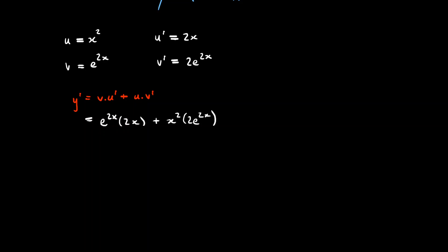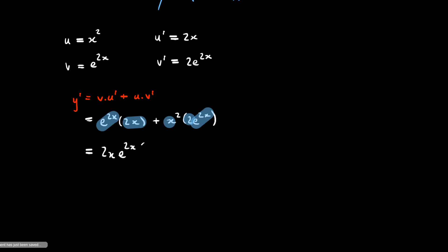It's probably a good idea to factorize this. We've got common factors available — a common factor of e to the 2x and a common factor of 2x. So let's factorize that to get 2x e to the 2x, open bracket, 1 plus x, close bracket.